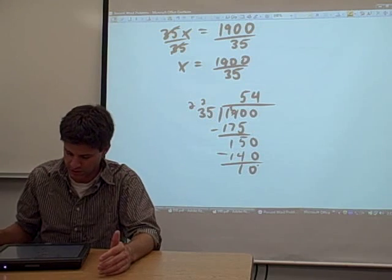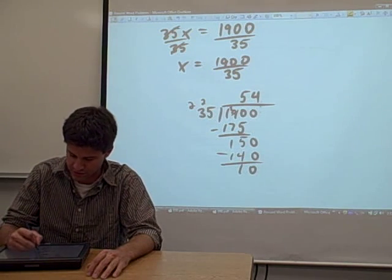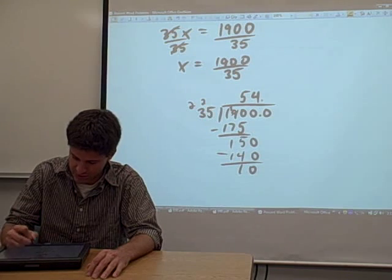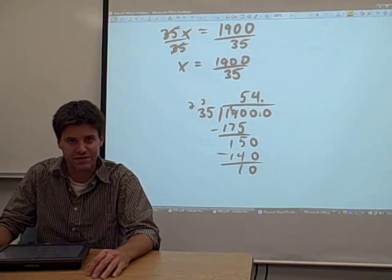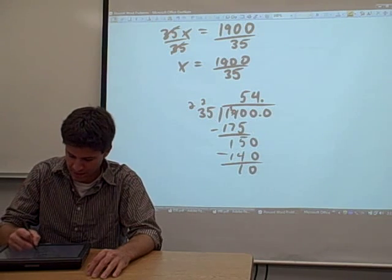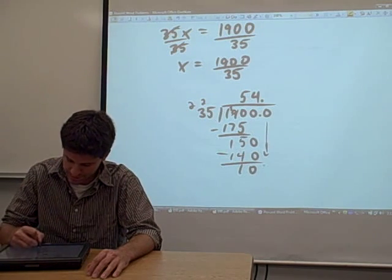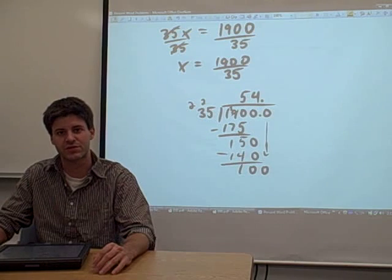Now what we can do, since we didn't get a remainder of 0, is add some decimal places to this problem. Add a point at the end of our 1900, point 0, bring down the 0, and continue the long division like we normally would.